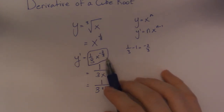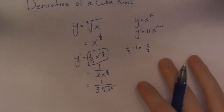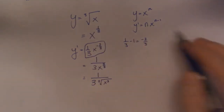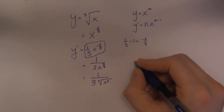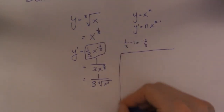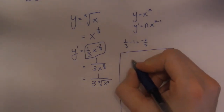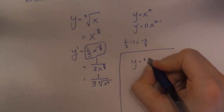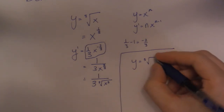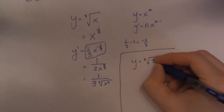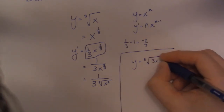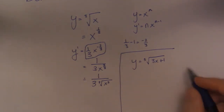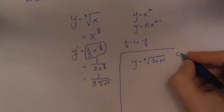So the other thing you might run into when dealing with a cube root is what happens if there's not just x underneath. Let's say we have a linear function — 3x plus 1 — underneath. So if I have a linear function underneath, this is essentially now a chain rule question.